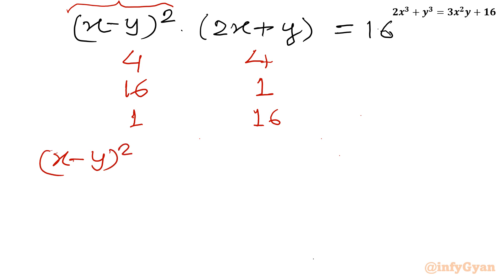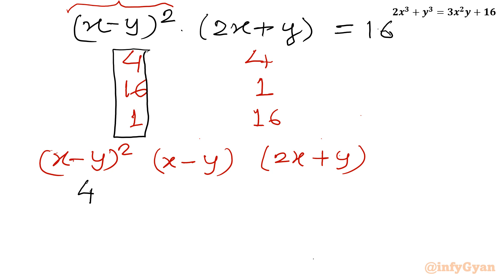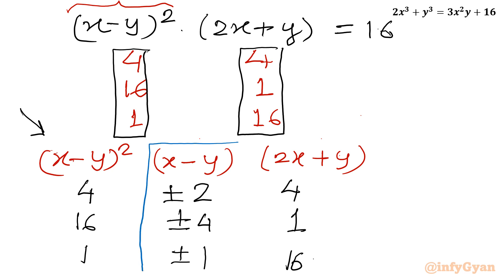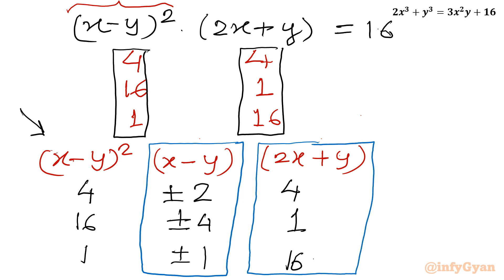Now I will frame a chart with columns: (x − y)², then x − y, then 2x + y. The values for (x − y)² are 4, 16, and 1, with corresponding 2x + y values of 4, 1, and 16. Taking square roots of the (x − y)² column gives x − y = ±2, ±4, ±1. So the question is open for 6 systems of equations — 3 with positive sign and 3 with negative sign.